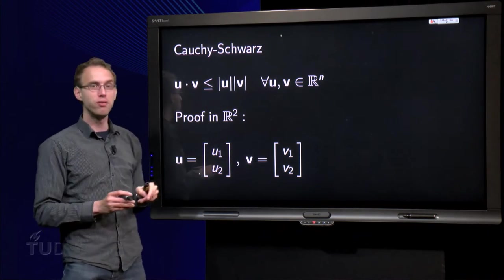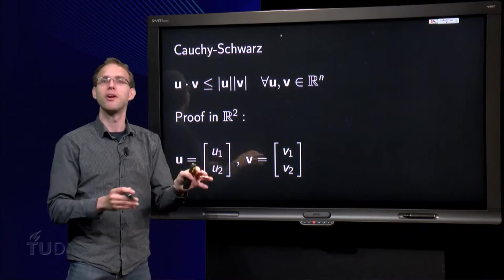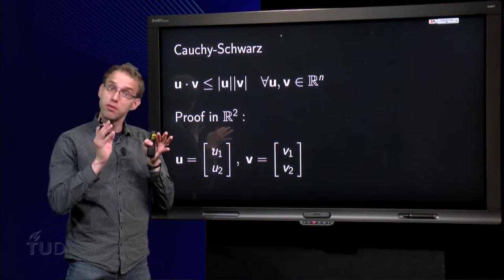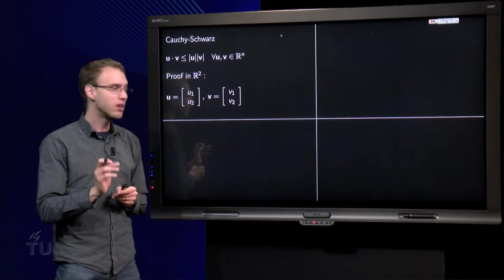So, we call vector u (u₁, u₂) and vector v (v₁, v₂). And I will have to prove this for any values of u₁ and u₂ and v₁ and v₂.